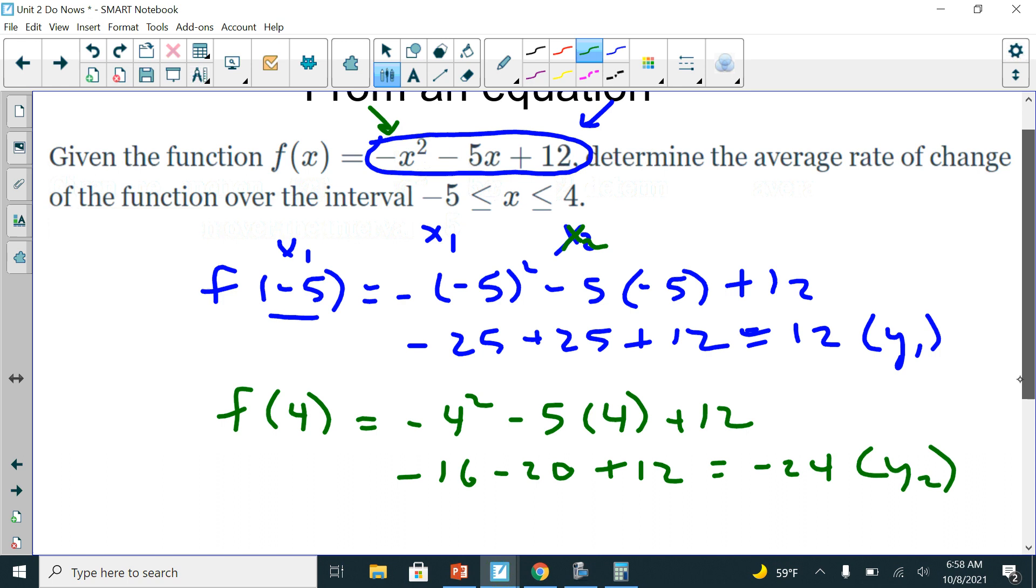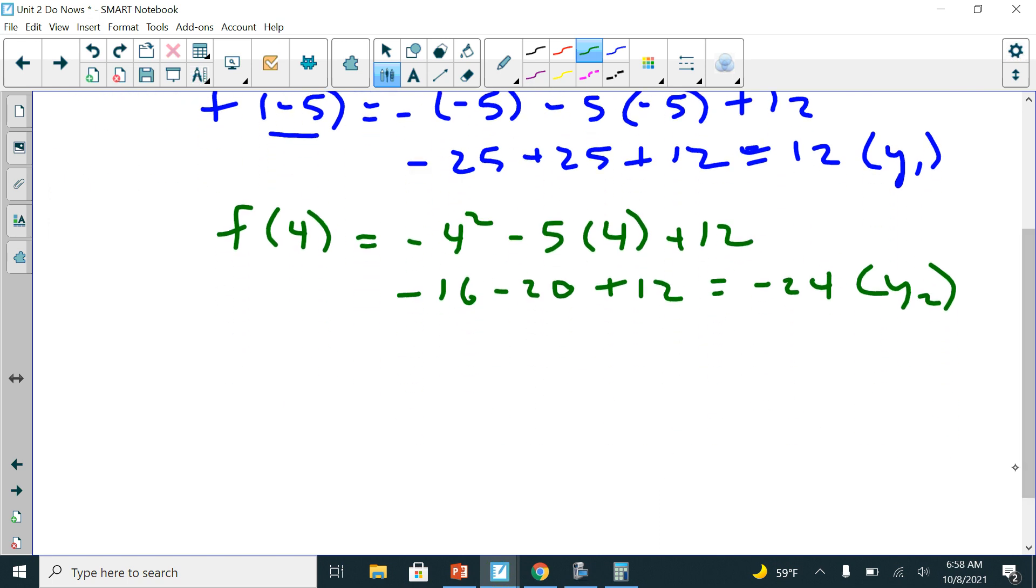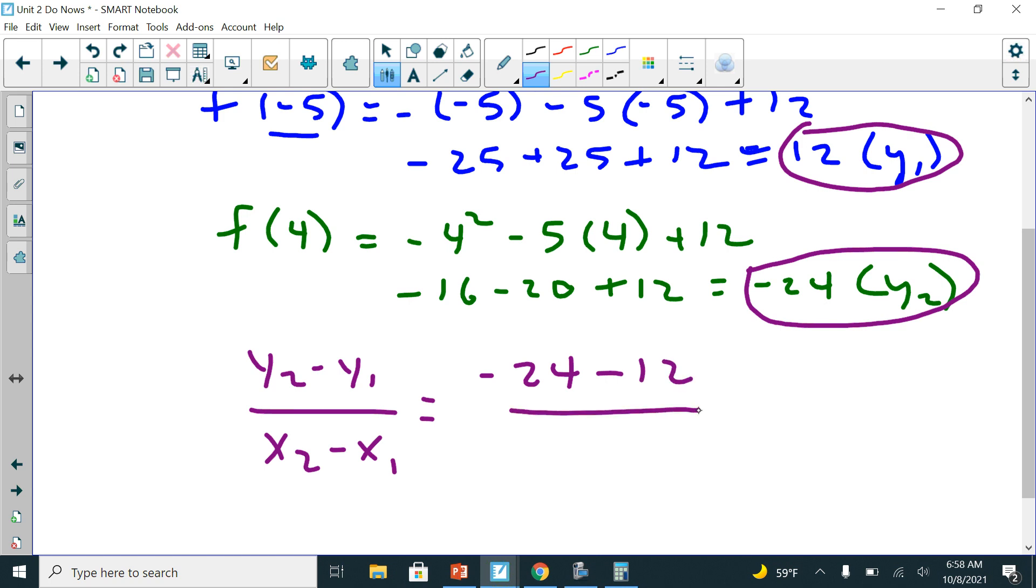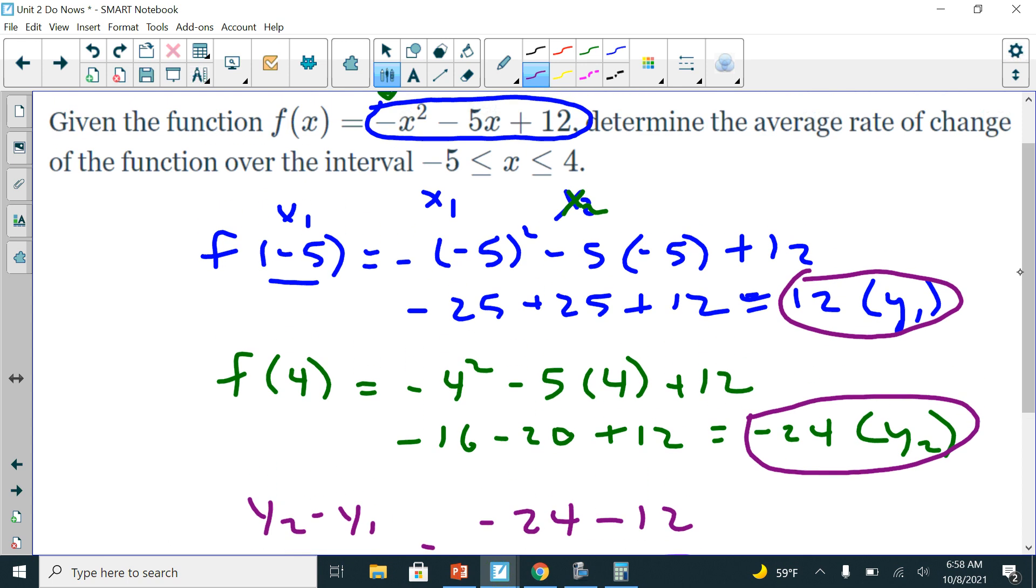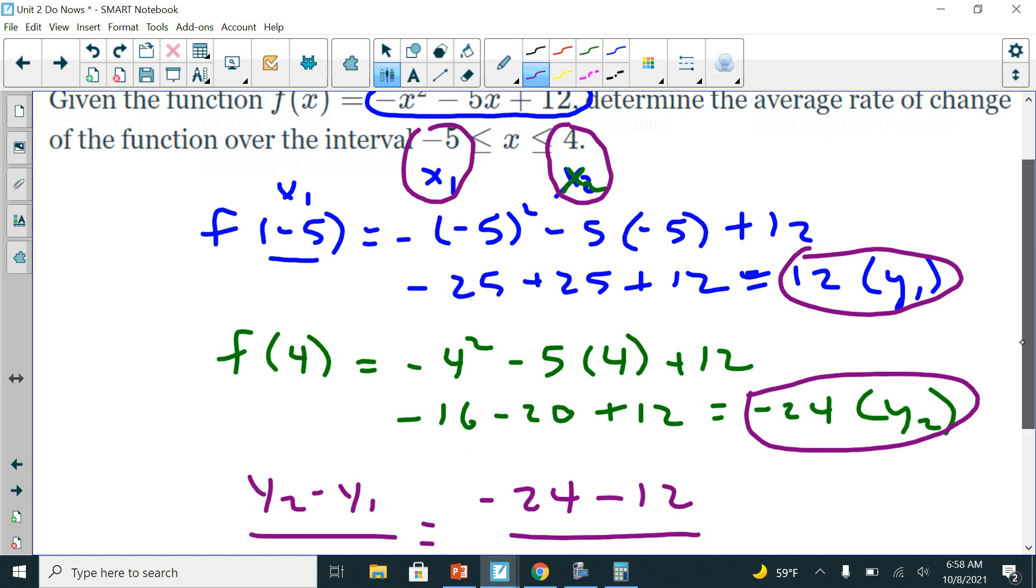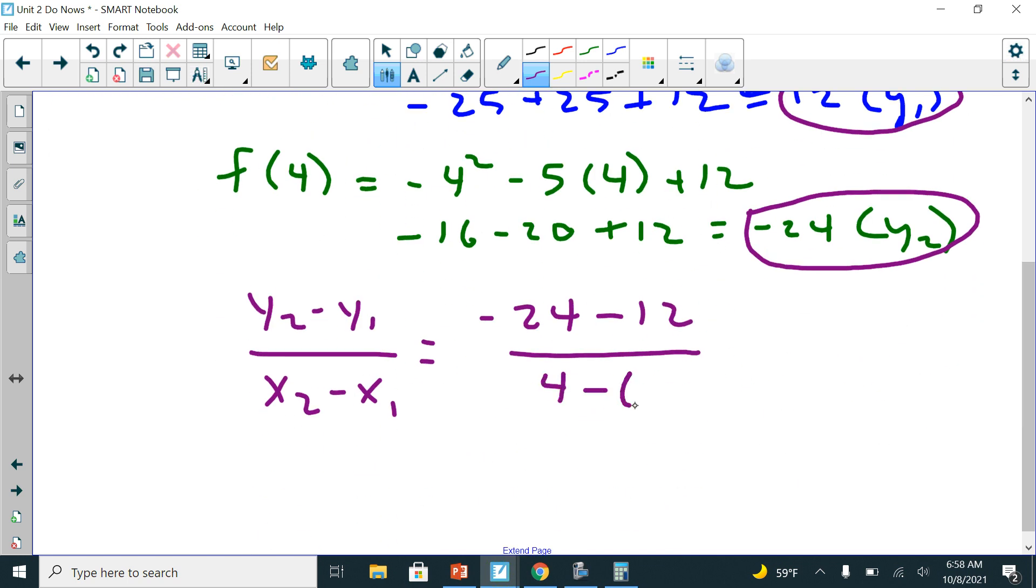So now we're going to plug it into the formula. y2 minus y1 over x2 minus x1. So I'm going to go like this. So my y2 is negative 24, so I'm going to go negative 24 minus my y1 is 12, right here. So 12. And then I'm going to do the same thing with my x's. So my x2 is 4, right there. And my x1 is negative 5. I'm going to plug that in. So I have 4 minus negative 5.